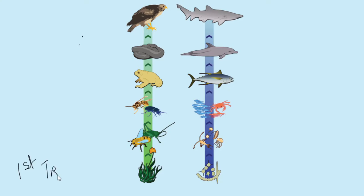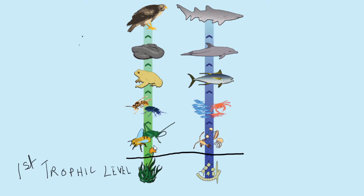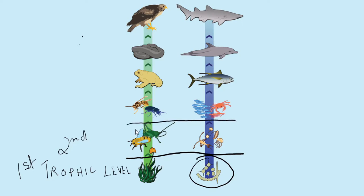At the first trophic level, the primary producers in the grassland ecosystem are species of grass and some flowers. In the marine ecosystem, phytoplankton occupy the first trophic level — these are organisms that use photosynthesis to prepare food and make organic matter. At the second trophic level in the grassland ecosystem, we have insects like a honey bee dependent on flower nectar, and a grasshopper or locust dependent on grass.